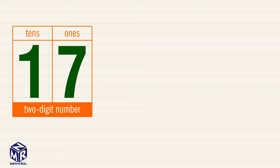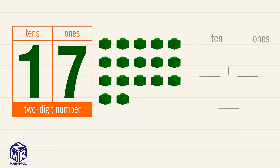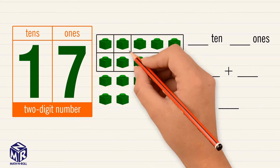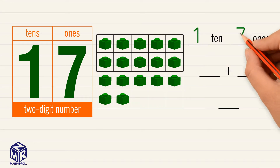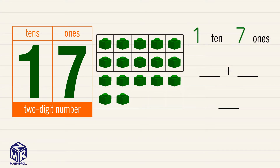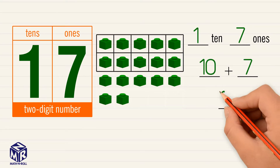We can use different ways to write a number as 10s and 1s. Let's take a look at the model. We can group 10 ones to make a 10. So we can write 17 as 1 ten and 7 ones. We can also write 17 as 10 plus 7, or 17.